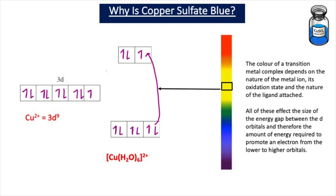So in the case of this complex, red light is absorbed and blue light is reflected because the colour that you see is the colour not absorbed. So it's absorbing from the red end of the spectrum and blue light is therefore being reflected, and that's why you observe a blue colour.